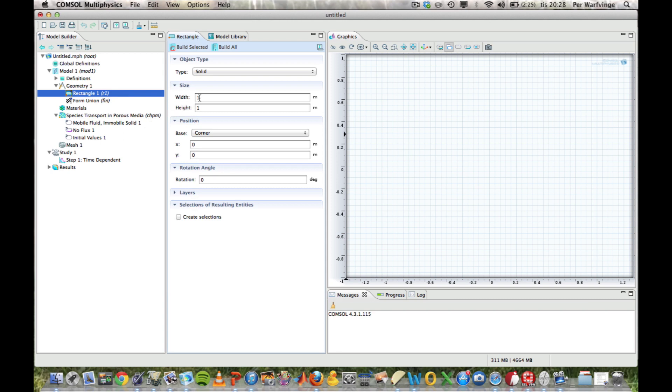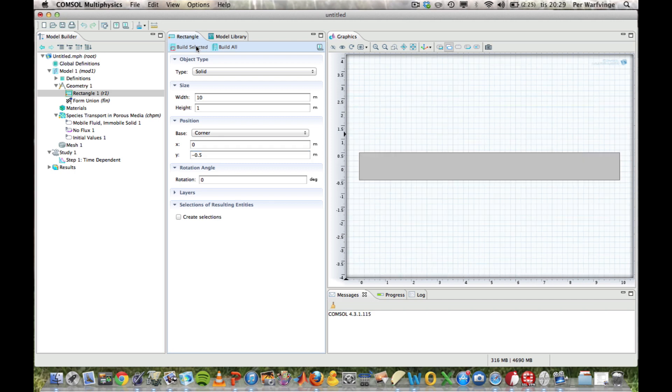Then I will have a width of 10, a height of 1, and where should I put it? Well, it starts at 0 in the x-dimension, which is horizontal. But I'll put the left corner down in minus 0.5, so it's symmetrical with respect to the x-axis. And then I build this, and it shows up.